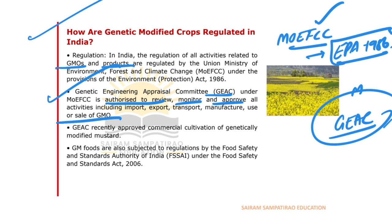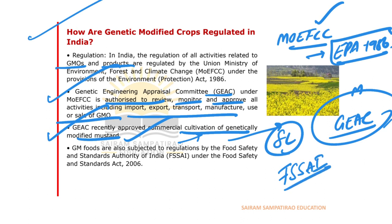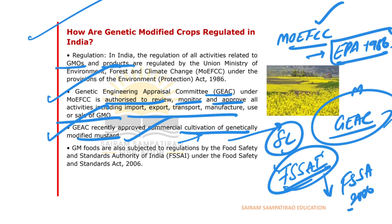GEAC recently approved the commercial cultivation of genetically modified mustard, but this approval is pending before the Supreme Court. GM foods are also subjected to regulations by the Food Safety and Standards Authority of India (FSSAI), supervised under the Food Safety and Standards Act of 2006.